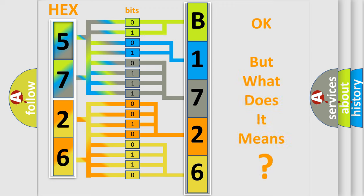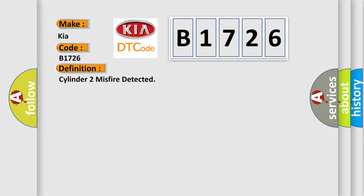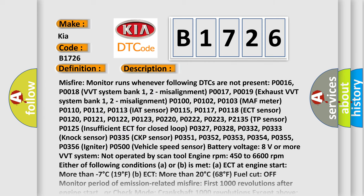The number itself does not make sense to us if we cannot assign information about what it actually expresses. So, what does the Diagnostic Trouble Code B1726 interpret specifically for Kia car manufacturers? The basic definition is: Cylinder 2 misfire detected. Here is a short description of this DTC code.